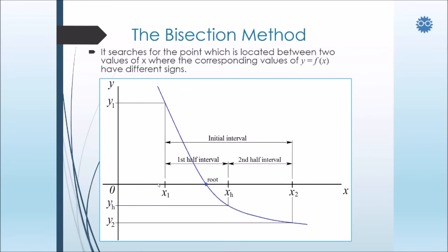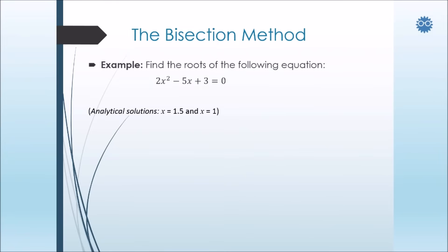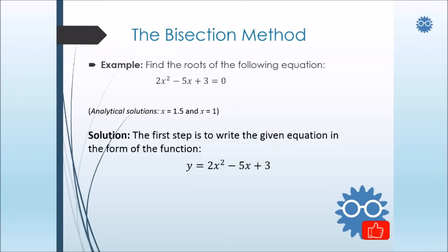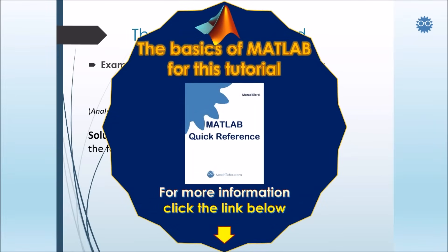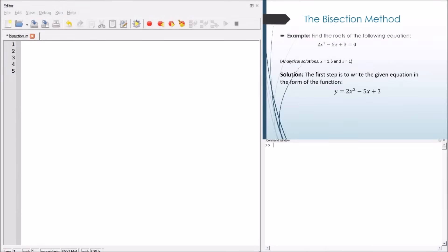Now, we can go to see our example in order to code this method to find the roots of the given equation. So we have the equation 2x² - 5x + 3 equals zero. So our first step is to put the equation in the form of a function y = 2x² - 5x + 3. Then we'll go to the Octave or MATLAB editor in order to start our code.